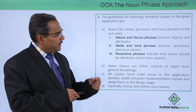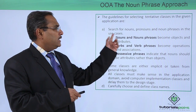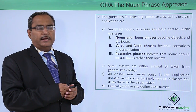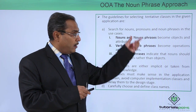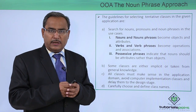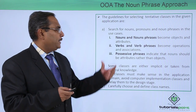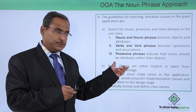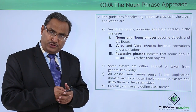The guidelines for selecting tentative classes in the given application are: search for nouns, pronouns, and noun phrases in the use cases. Use cases are nothing but the functional requirements in the system. Nouns and noun phrases become the objects and attributes, while verbs and verb phrases become the operations and associations.